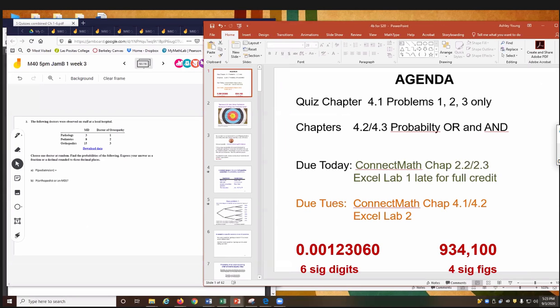Someone last class pointed out they had some questions about sig figs, significant digits. So I've put together a tiny little thing here to show you guys. For decimals, you go to the first non-zero digit, so that would be 1, and start counting from there. So 1, 2, 3, 4, 5, 6. The last zero on the end, these guys count. So this is 6 sig figs.